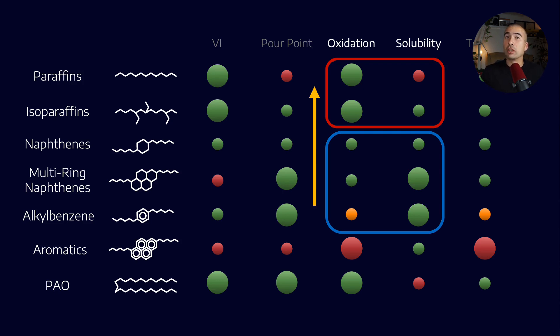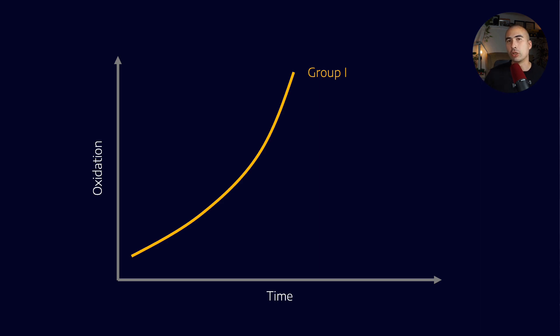The good thing is, because we have more oxidation stability, the onset of that is at a much later time. But if we look at the oxidation behavior of different kinds of base oils, what you'll tend to see is that Group 1 style lubricants follow this kind of curve. So the oxidation increases at an increasing rate. We know that oxidation is a process that feeds upon itself, but it has this kind of characteristic curve.